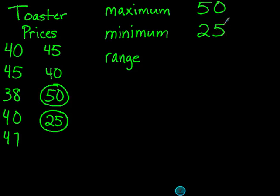Sometimes when looking through data we're asked to find the range. The range of a set of numbers is the difference — difference means subtraction — between the maximum and the minimum number. So to find the range we find the difference between 50 and 25: 50 minus 25 equals 25, so our range is 25.